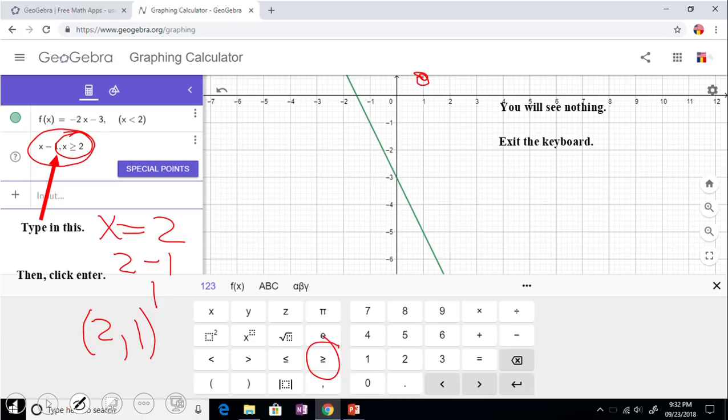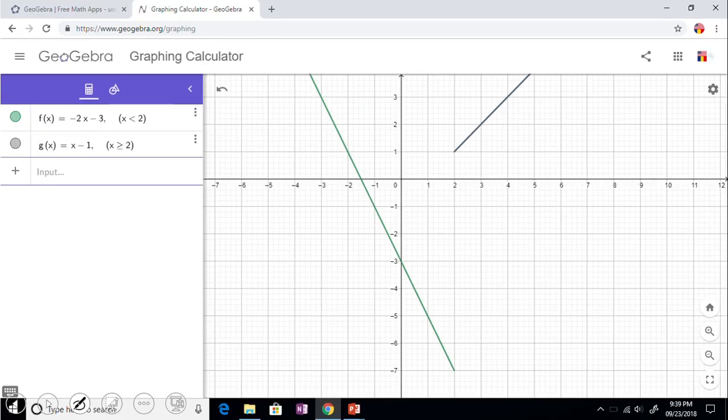Exit the keyboard and also again try to drag your coordinate grid so you can see something like that. And now also you notice GeoGebra put another function here. That's the way GeoGebra is dealing with this piecewise function. But now we can see two graphs.